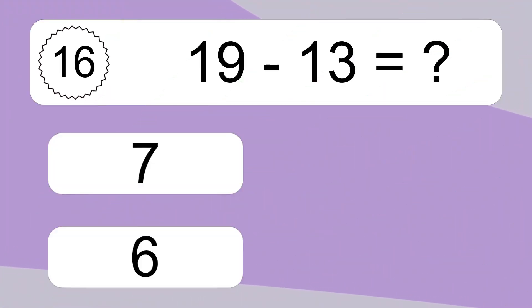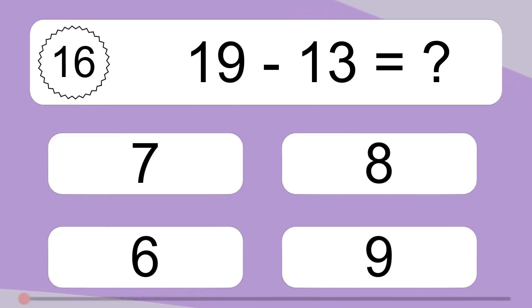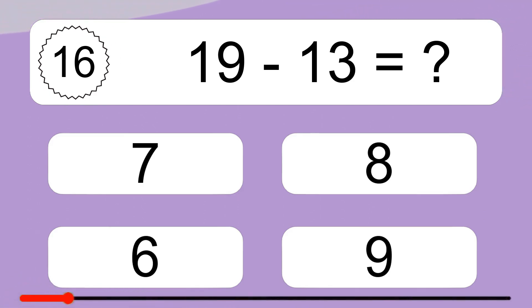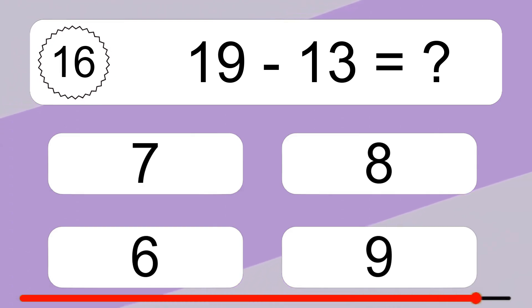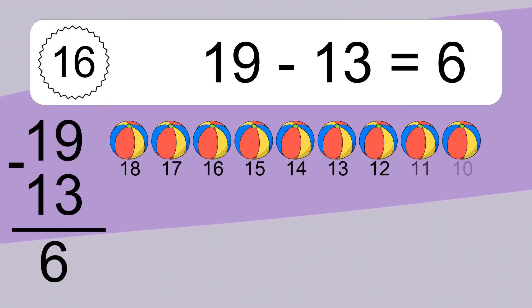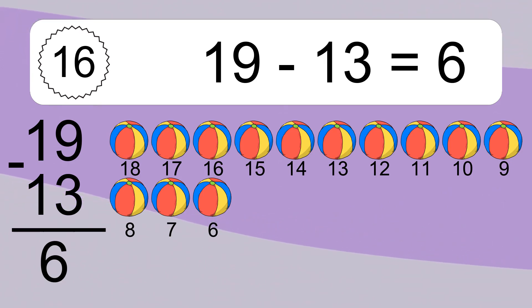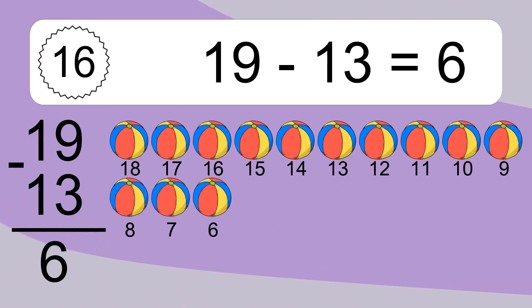19 minus 13 equals what? 19 minus 13 equals 6. Let's count it. 18, 17, 16, 15, 14, 13, 12, 11, 10, 9, 8, 7, 6.